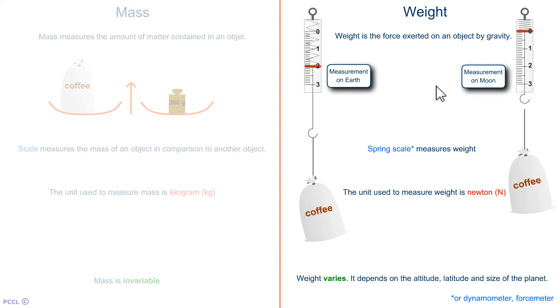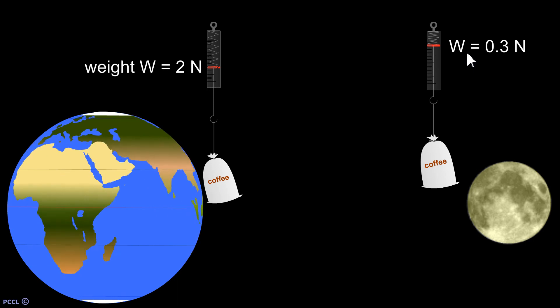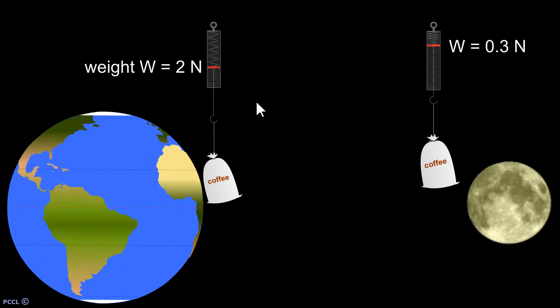On the moon, you see that the spring extends less. The moon is less attractive to the coffee bag. The weight is 6 times lower on the moon than on earth. And it will be 6 times lower for all objects. So, you retain dynamometer, you retain Newton and you retain that the weight, unlike the mass, depends on the planet.